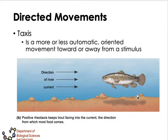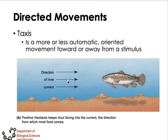Taxes is a more-or-less automatic, oriented movement toward or away from a stimulus. For example, a fish moves against the flow or current of the river — this is called rheotaxis, where stream fishes automatically swim in an upstream direction. A well-known example is the migration of salmon from saltwater ecosystems toward freshwater ecosystems, where they fight the current of the stream, moving against the flow of water.